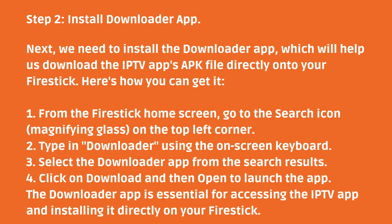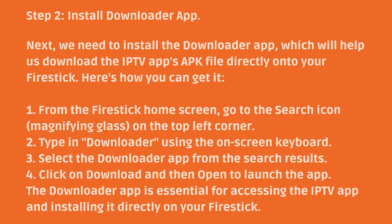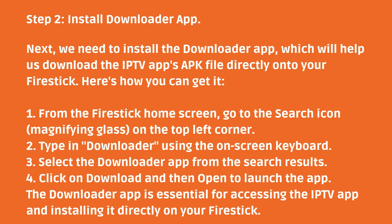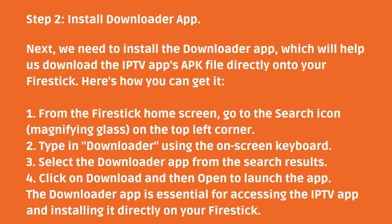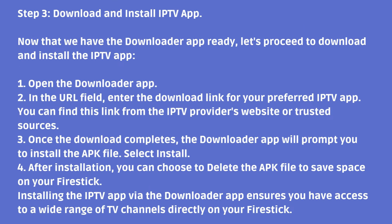From the Fire Stick home screen, go to the search icon — the magnifying glass on the top left corner. Type in Downloader using the on-screen keyboard. Select the Downloader App from the search results. Click on Download and then Open to launch the app. The Downloader App is essential for accessing the IPTV app and installing it directly on your Fire Stick.